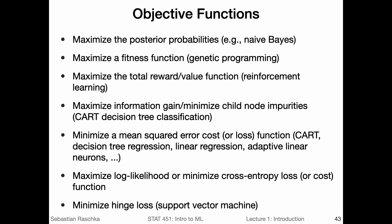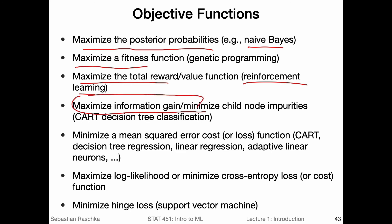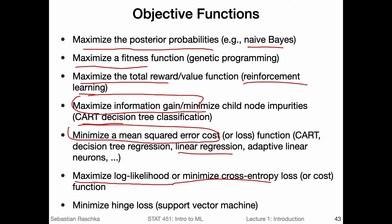Regarding the objective function, the optimization metric or measure, there are different types of objective functions. I'm just listing some of them here because you may have heard of them already. We can maximize the posterior probability — that is done in naive Bayes classifiers. You can maximize the fitness function, which is usually done in genetic programming. You can maximize the total reward or value function, which is typical of reinforcement learning. Maximizing information gain is what we do in decision trees — in particular CART decision trees. In regression trees or linear regression, we minimize the mean squared error. We maximize the likelihood, or minimize the cross-entropy, in neural networks or logistic regression. And minimizing the hinge loss is something we do in support vector machines. You don't have to memorize that — I'm just showing you there are different objective functions that we optimize depending on what type of machine learning algorithm or model we choose.